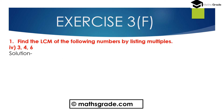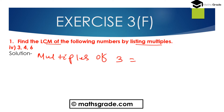Now question number 4, part (d): the numbers are 3, 4, and 6. We have to find the LCM of the numbers 3, 4, and 6 using the listing multiples method. First find out the multiples of 3, 4, and 6. Multiples of 3 are: 3, 6, 9, 12, 15, 18, and so on.